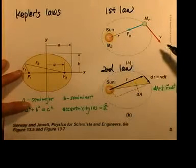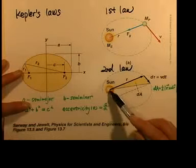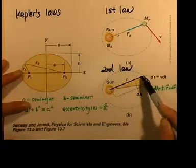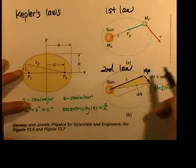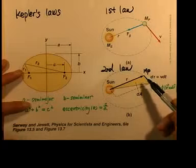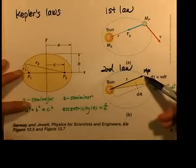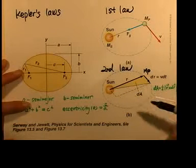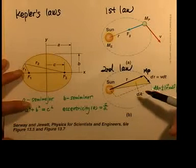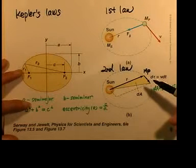Kepler's second law says the radius vector r drawn from the sun to a planet — right here, that's a planet of mass mp — sweeps out equal areas as the planet moves. That vector r will sweep out area dA in equal time intervals.